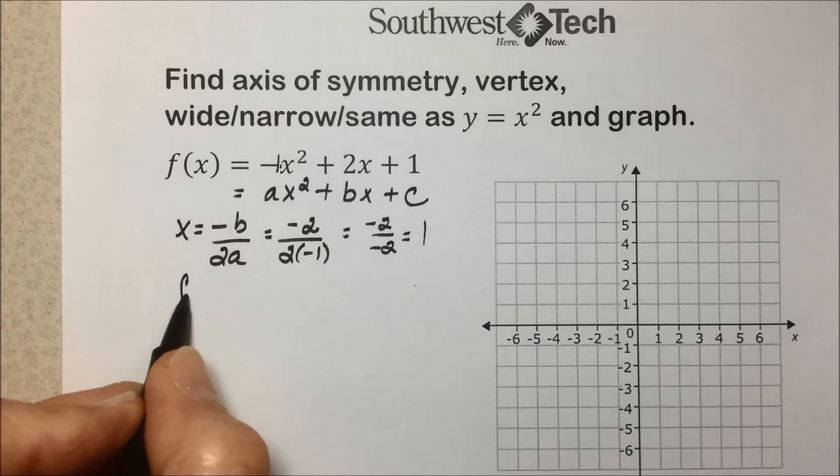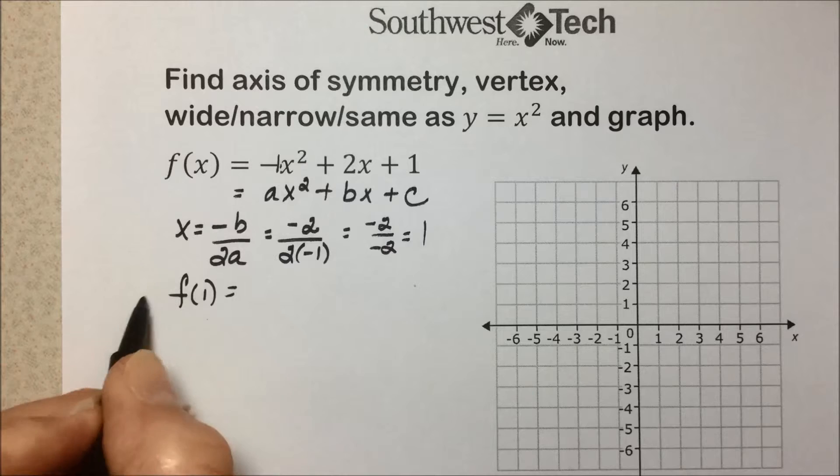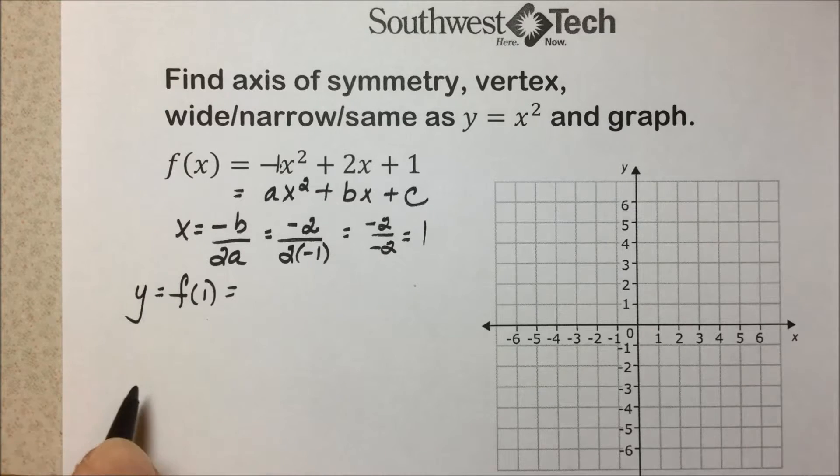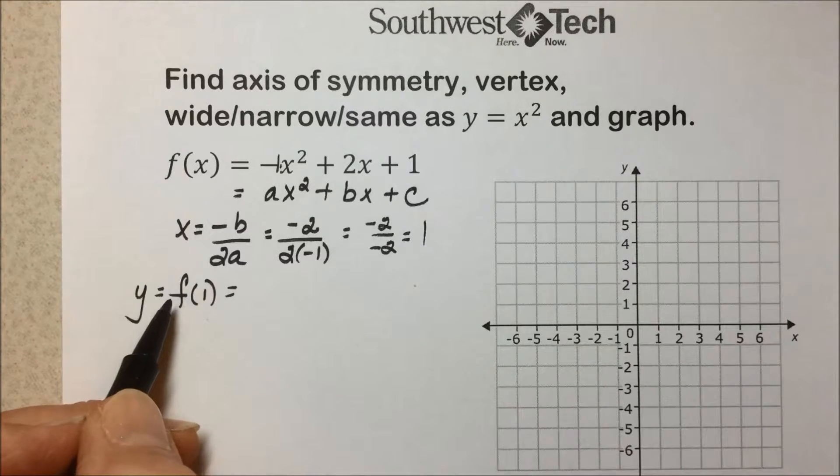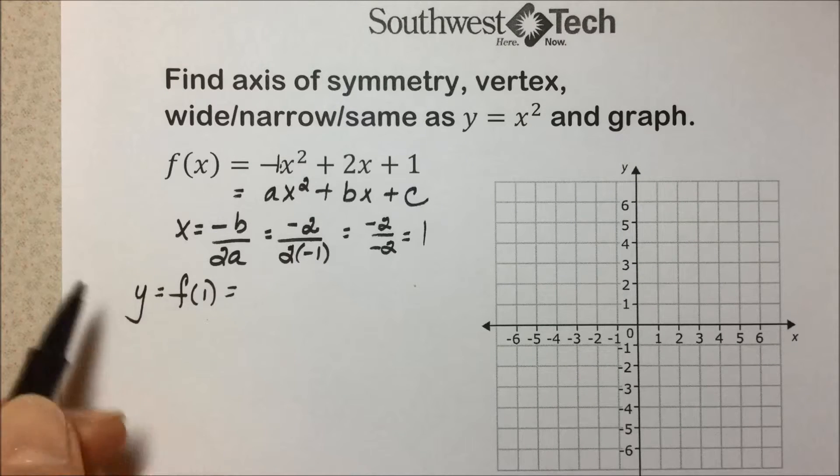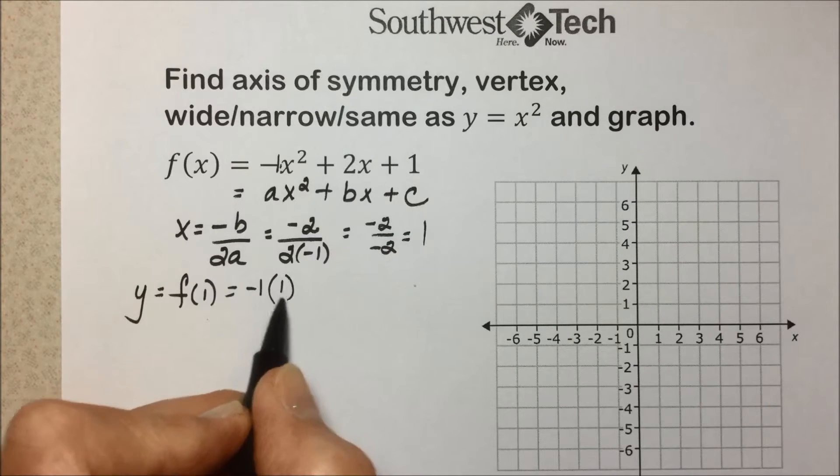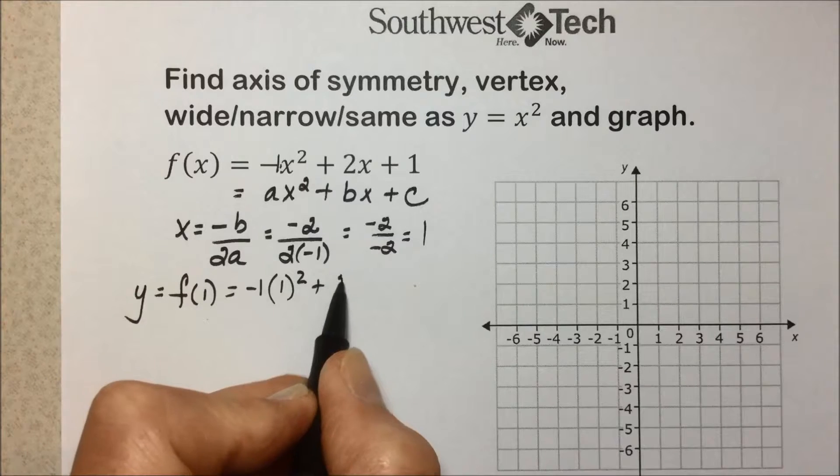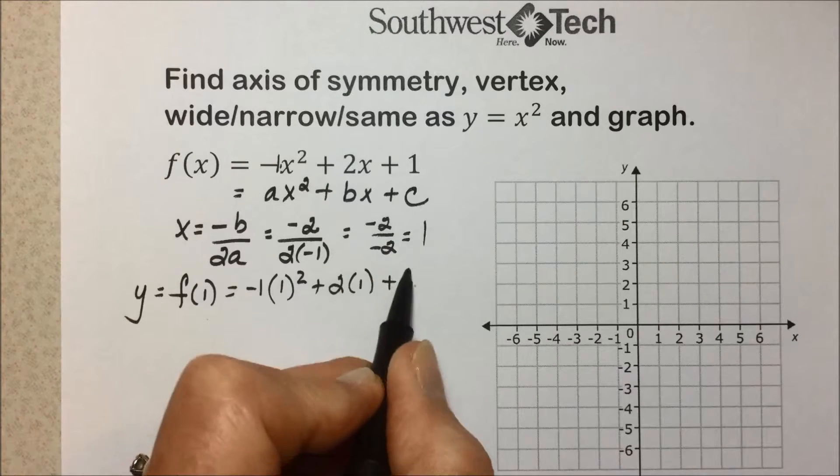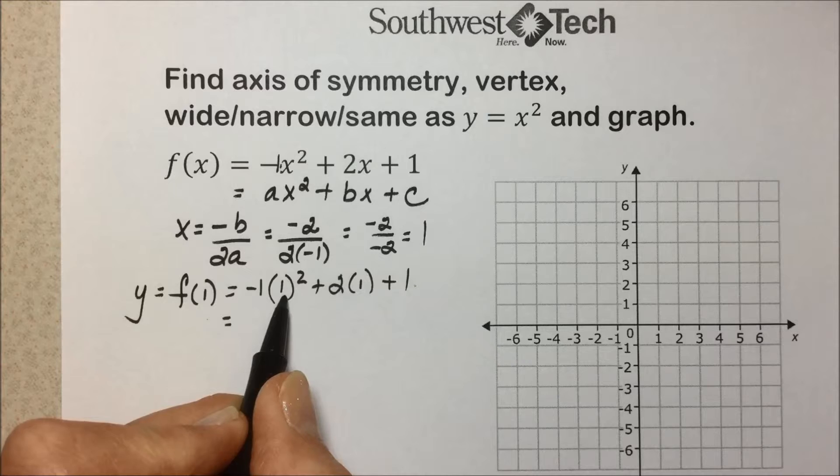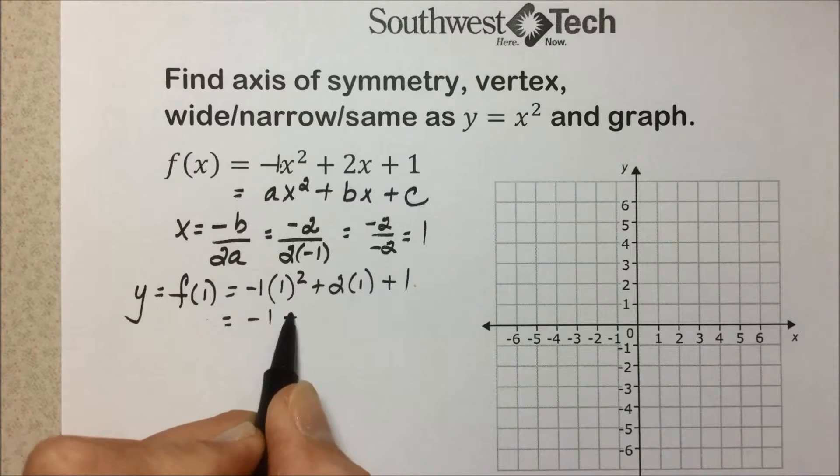Plugging that x into the function will give us the associated y value so that we can have the coordinates of the vertex. So replacing x with a 1 and simplifying.